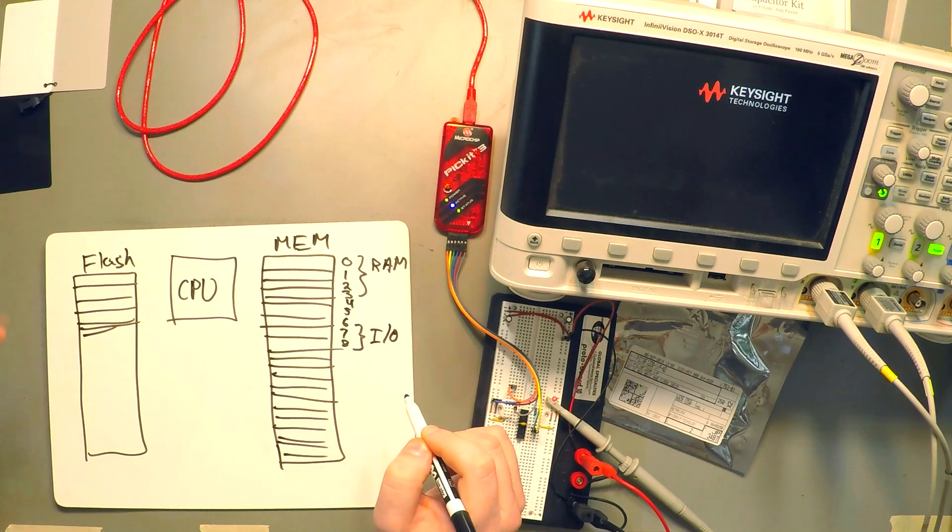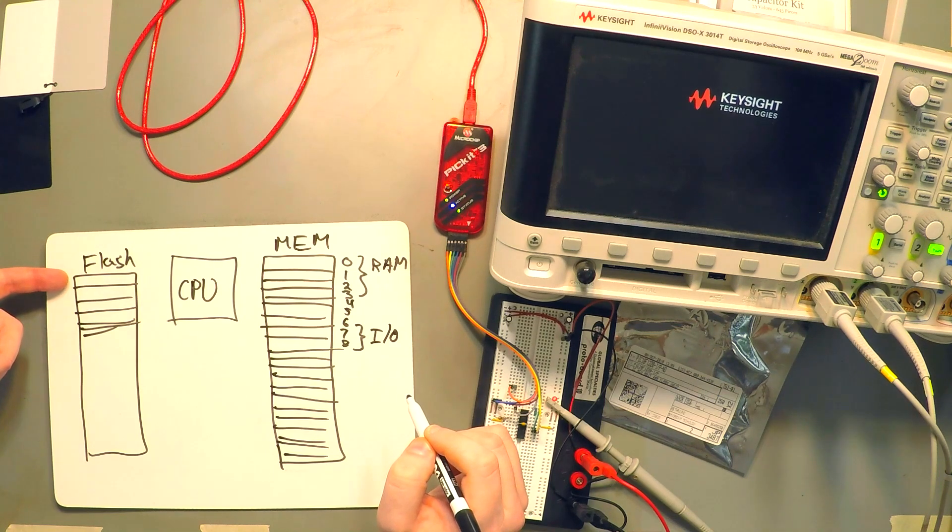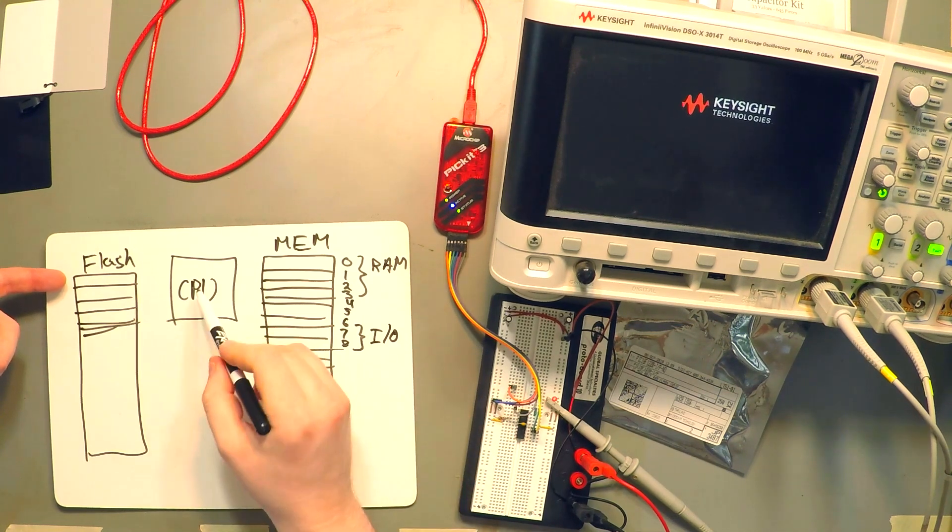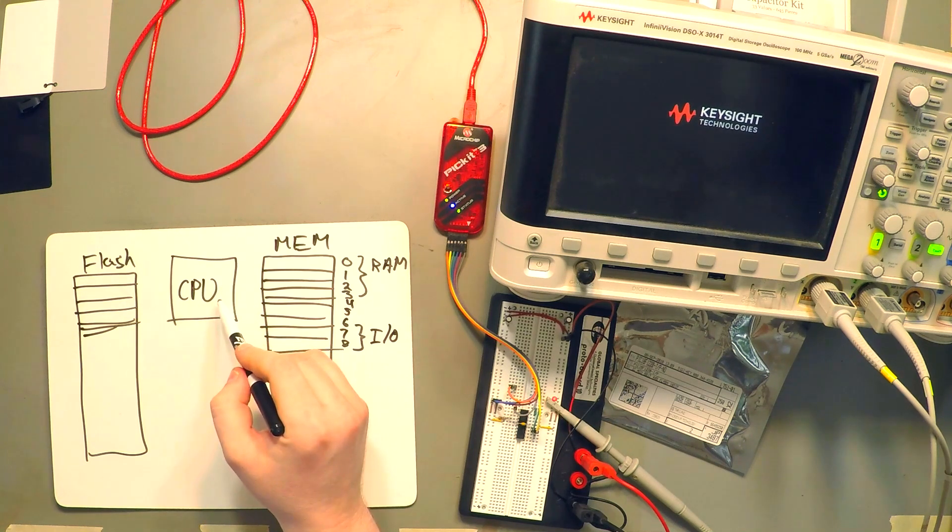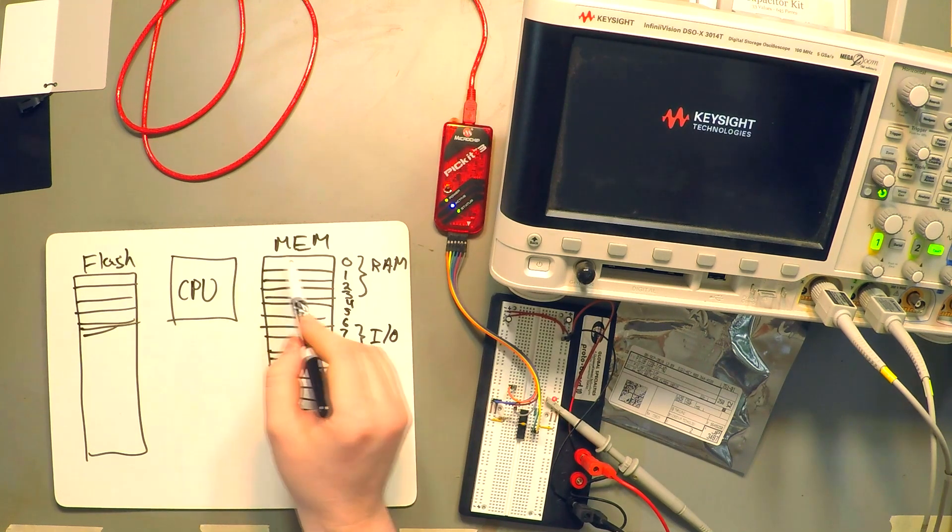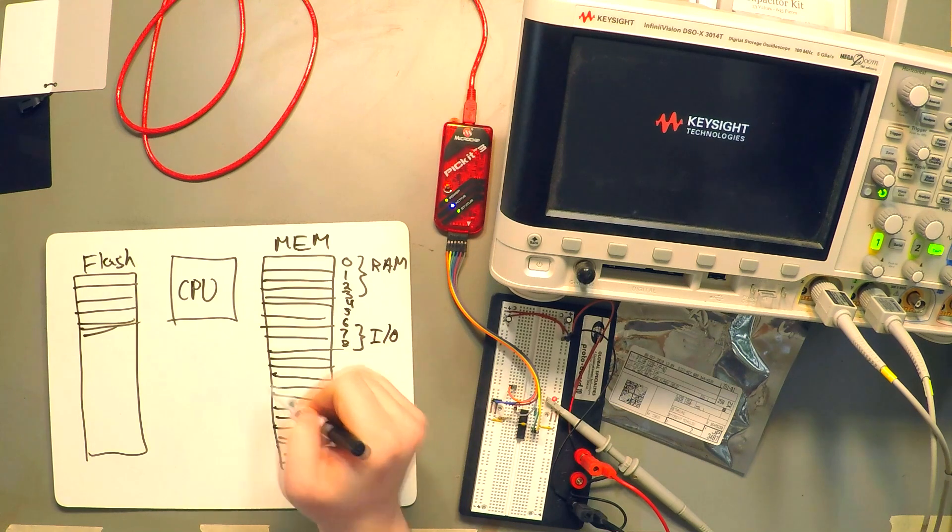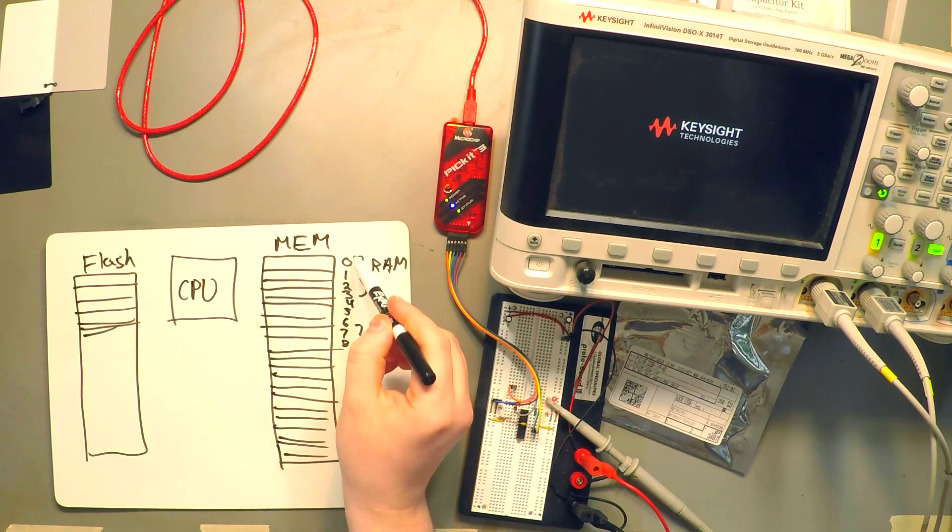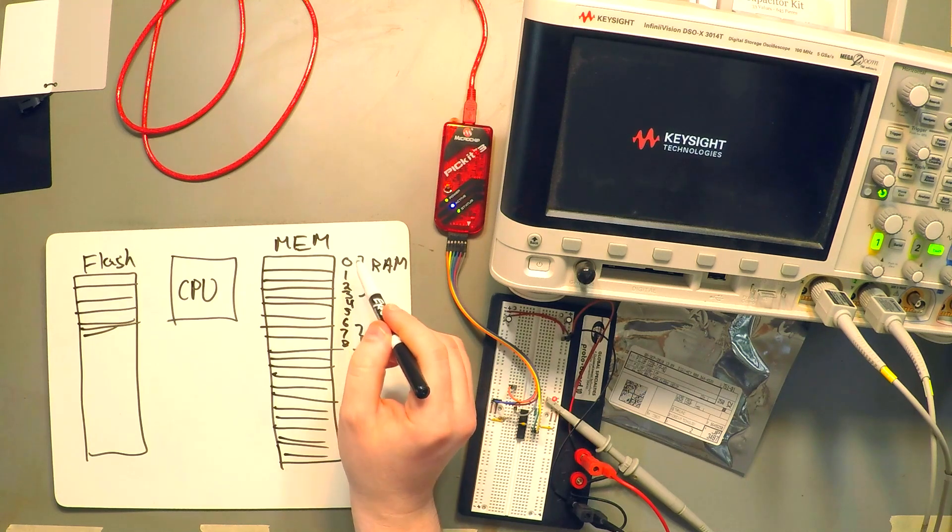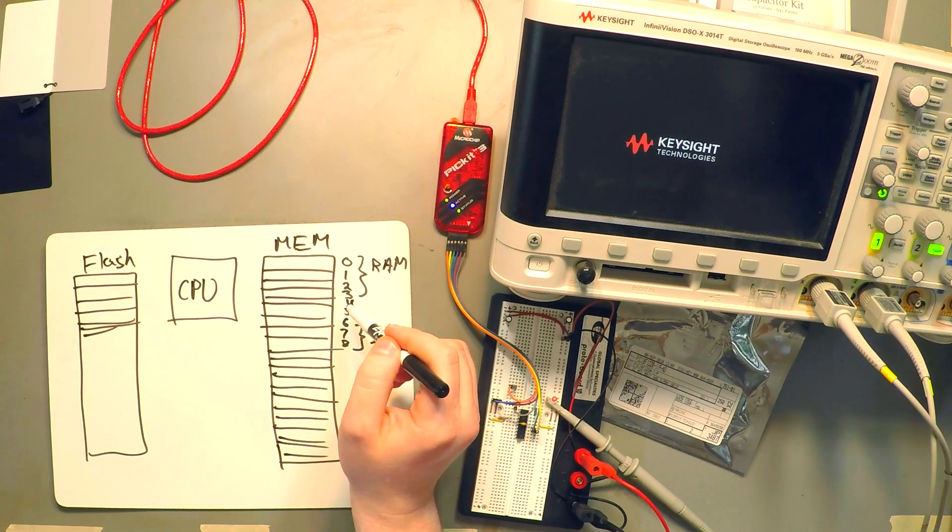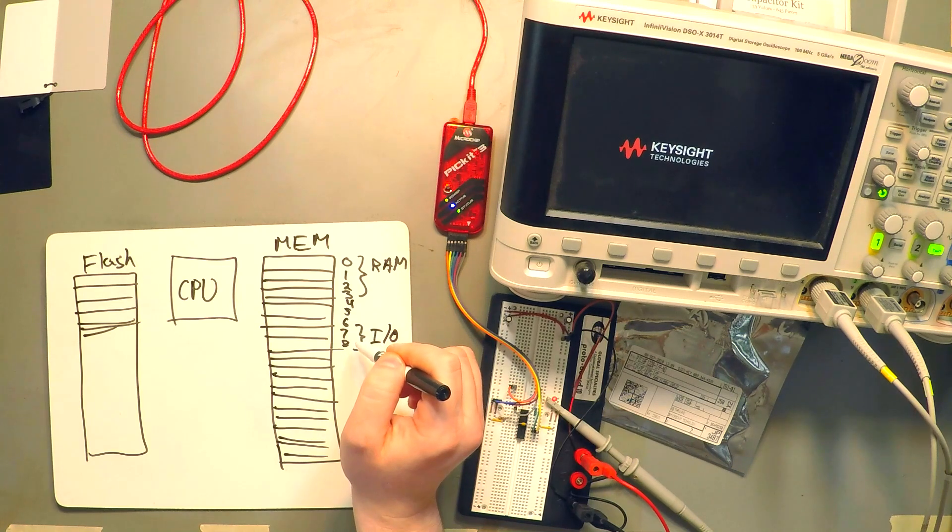Now, any instruction in the flash is going to be executed by the CPU and typically that instruction is going to be doing something to the second bank of memory. And depending which address you access, that will determine what you're actually going to be doing with the interaction.